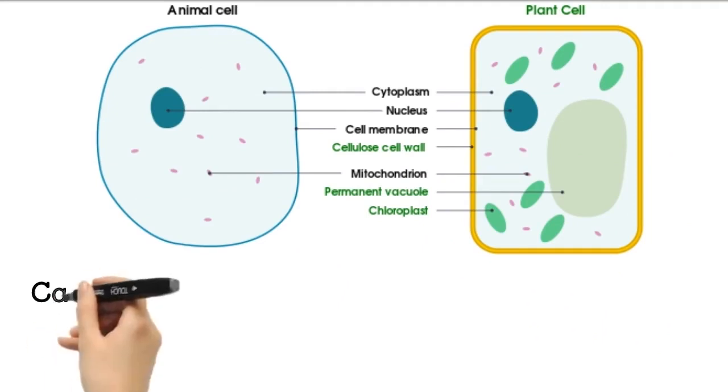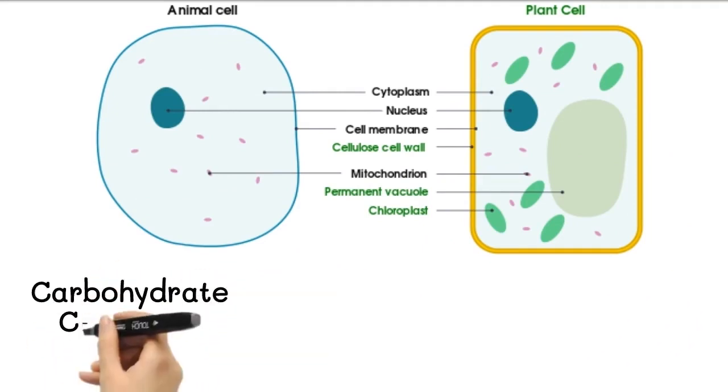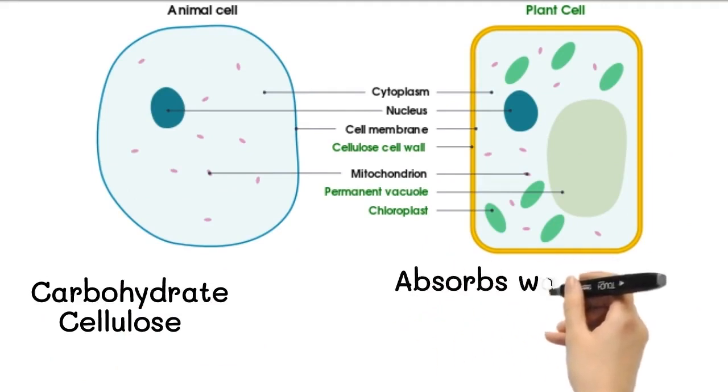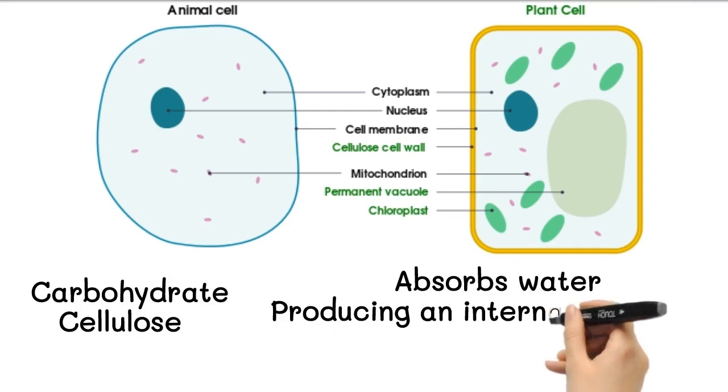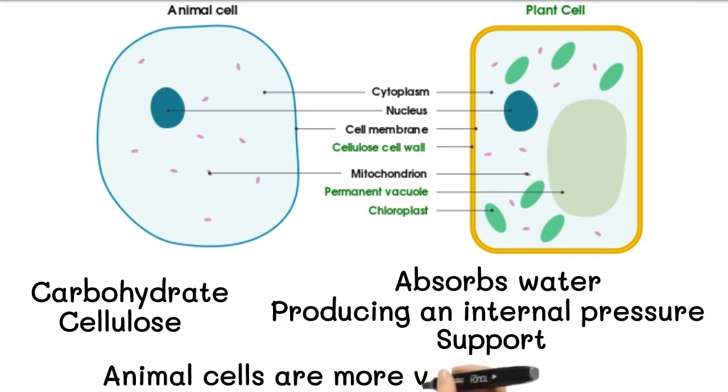It is made mainly of a carbohydrate called cellulose, although other chemicals may be added to the cell wall in some cells. Plant cells absorb water, producing an internal pressure that pushes against adjacent cells, giving the plant support. Without the cell wall strong enough to resist these pressures, this method of support would be impossible. Animal cells don't have a cell wall and tend to be more variable in shape.